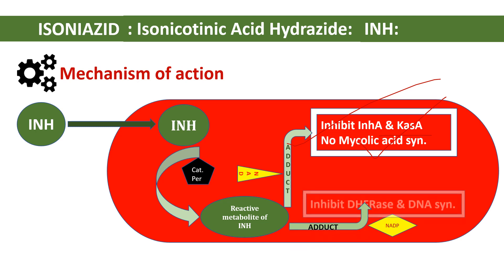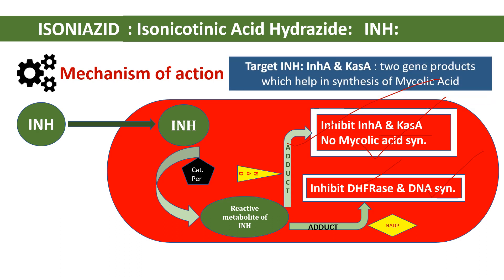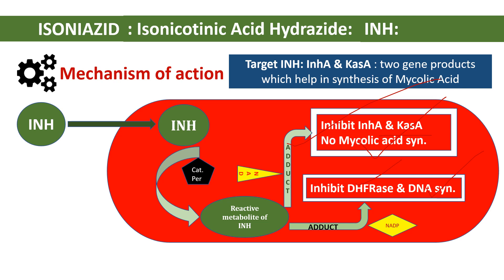Another NADP present within the mycobacterium acts on this reactive metabolite, leading to the formation of another adduct, which further inhibits dihydrofolate reductase enzyme, and DNA synthesis is also inhibited. Therefore, these are the two mechanisms by which INH acts. The targets of isoniazid are InhA and KasA, which are two gene products helping in the synthesis of mycolic acid.